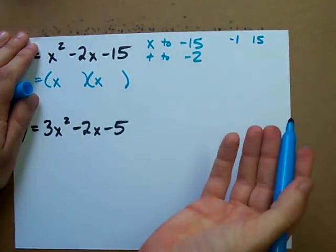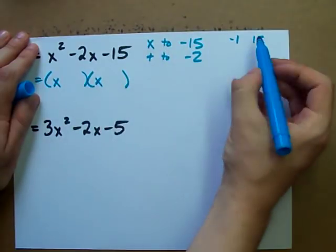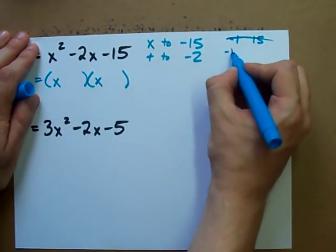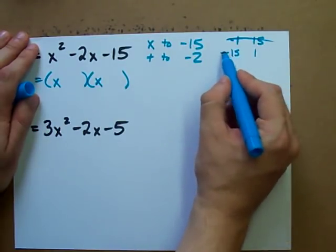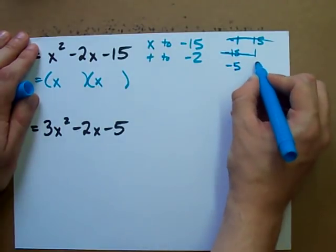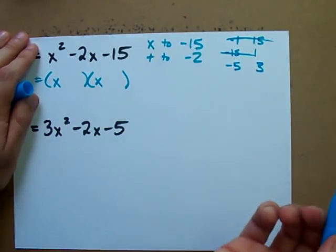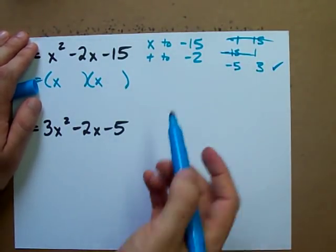What about negative 15 and 1? Those add to negative 14. That's no good. It needs to be negative 2. What about negative 5 and 3? Those multiply to negative 15 and they add to negative 2. Look at that. Those are the two. They multiply to negative 15 and add to negative 2.